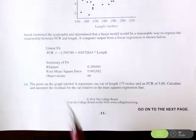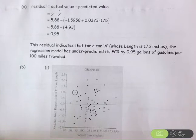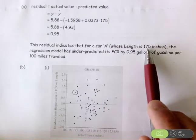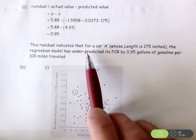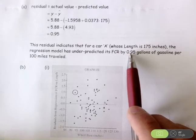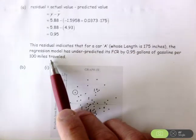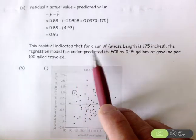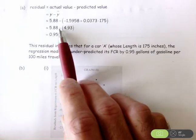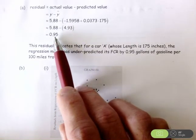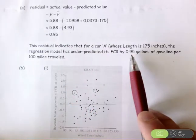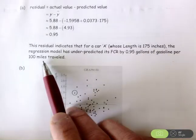We calculated the residual — now we have to interpret it. Write in context, just like almost anything else on the statistics exam. This residual indicates that for car A, which has a length of 175 inches, the regression model has under-predicted its FCR by 0.95 gallons of gasoline per 100 miles traveled. A positive residual means the actual value is larger than the predicted value, indicating an under-prediction — the prediction was too small — by 0.95 gallons of gasoline per 100 miles.